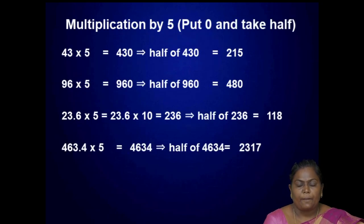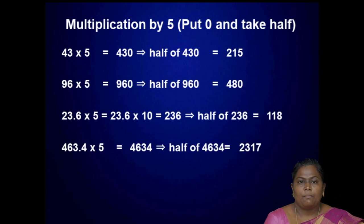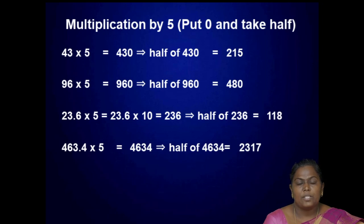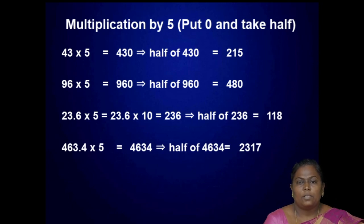Next, multiply by 5. Here we have to put 0 and then take half of that number. For example, multiply 43 by 5: add 0, so we get 430, then take half of 430 which is equal to 215. Similarly, multiply 96 by 5: adding 0 gives 960, then half of 960 divided by 2 which is equal to 480.